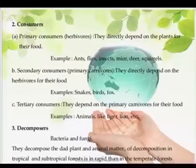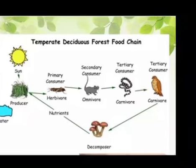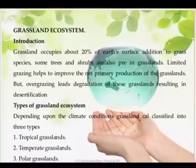Among bacteria, species of Bacillus, Clostridium, Pseudomonas, Angiococcus, and actinomycetes like Streptomyces are present. The rate of decomposition in tropical and subtropical forests is more rapid than in temperate ones. Here we can see the food chain existing in a temperate deciduous forest, followed by an illustration showing a food web in a forest.